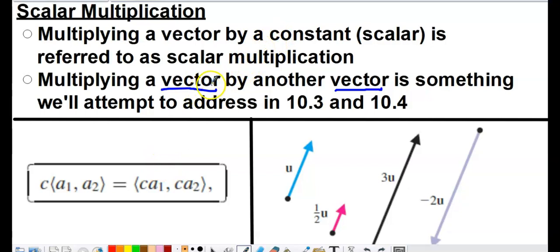When you multiply a vector together with another vector, that is a far more difficult issue to carry out. There are two ways to define it: one's called a dot product and one's called a cross product, or one's called a scalar product and one's called a vector product. We'll talk about what all those mean in the near future.